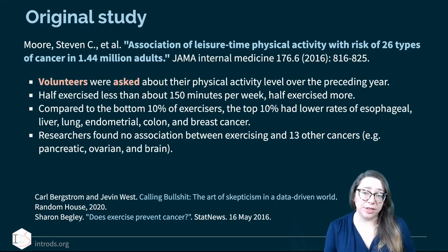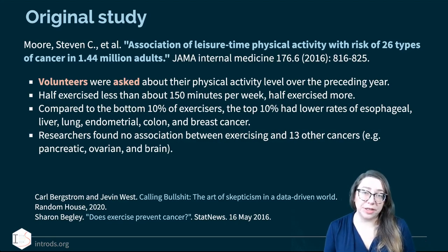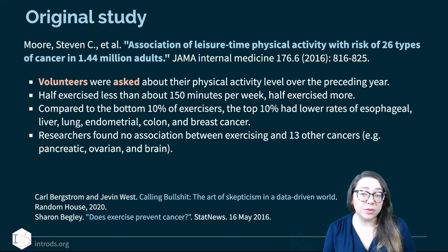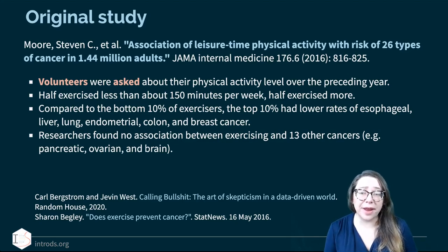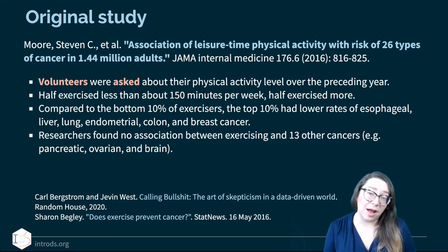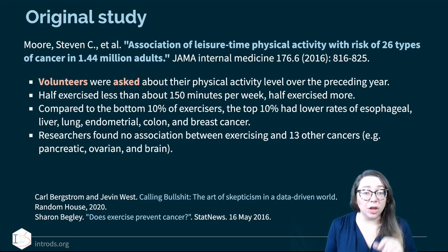The original study title is 'Association of Leisure-Time Physical Activity with Risk of 26 Types of Cancer in 1.44 Million Adults.' That's a huge sample, which is why there was lots of news coverage. But digging in, volunteers were merely asked about their physical activity level over the preceding year — they weren't told to exercise or not. About half exercised less than 150 minutes per week and half exercised more, and the top 10% of exercisers had lower rates of esophageal, liver, lung, endometrial, colon, and breast cancer compared to the bottom 10%.